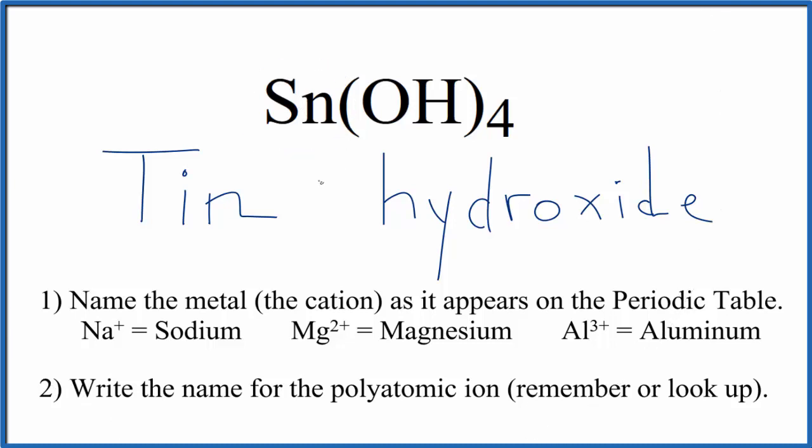But tin, that's a transition metal, so we need to write the charge here in the name. We know that the hydroxide ion, the whole thing, is 1 minus, and we have 4 of them.